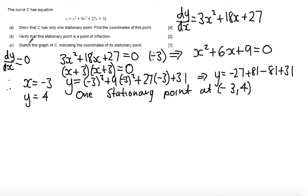Part B says verify that this stationary point is a point of inflection. Generally we would use the second derivative d²y/dx² to classify the point. But as I know it's a point of inflection, using d²y/dx² is going to give a value of 0, which is inconclusive — it doesn't confirm it's a point of inflection.